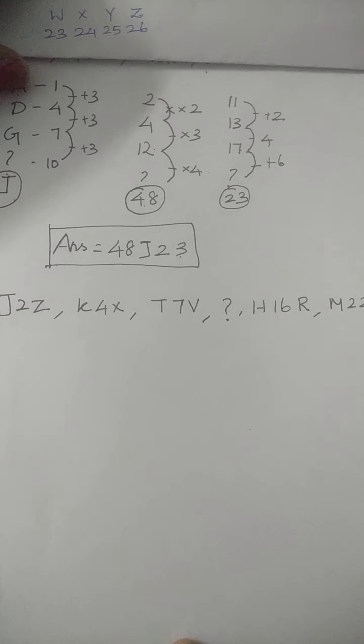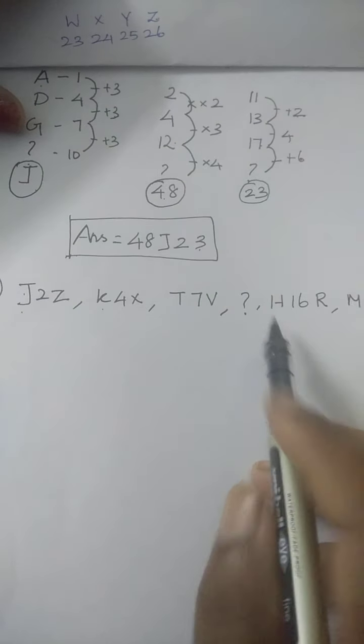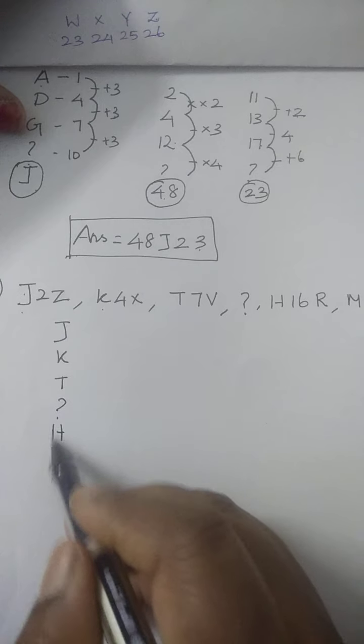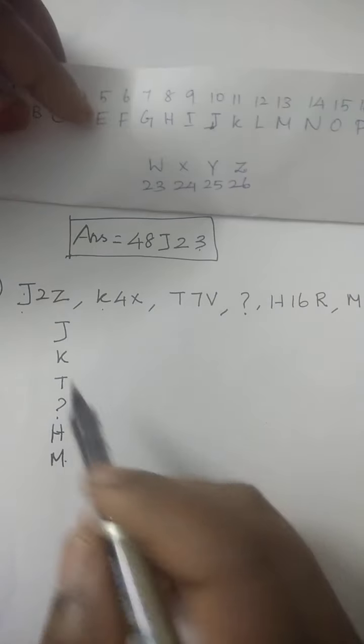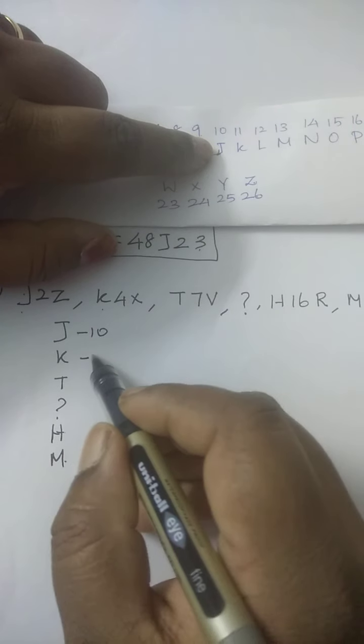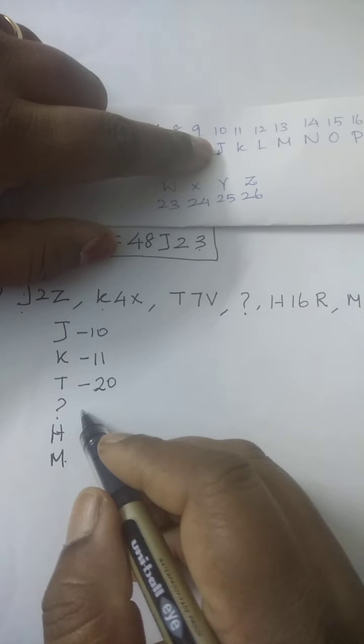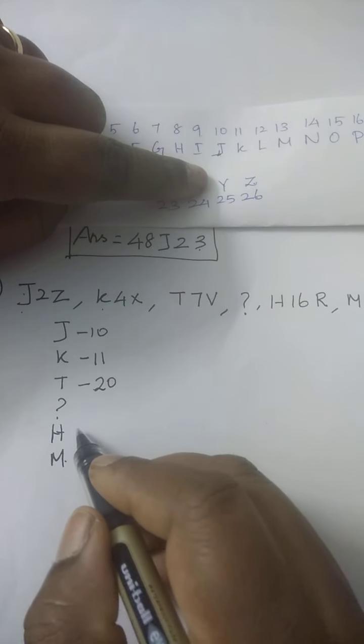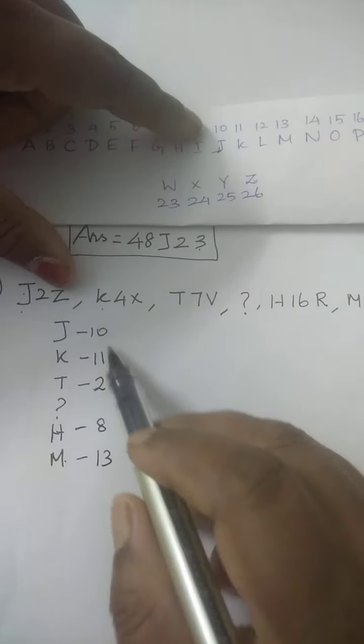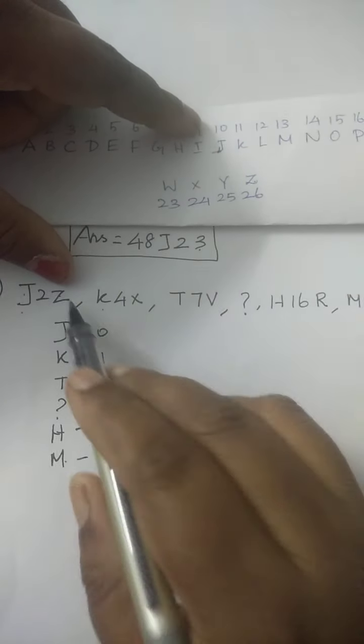Now we are going to find the first element of every order. See, I am going to write the first element of every order separately: J, K, I, H, M. So compare the elements with numbers. Write J as 10, then K is 11, then I is 20, then we don't know about the other element, and then question mark. H is 8, then M is 13. See, just a different sum, it's an increasing order and then again it's decreasing, again increasing.